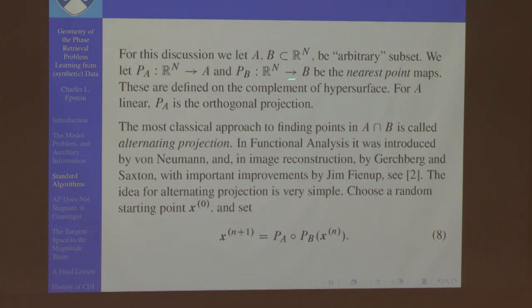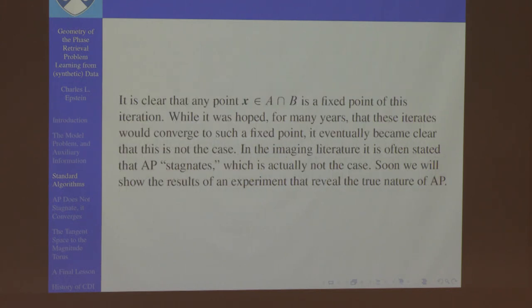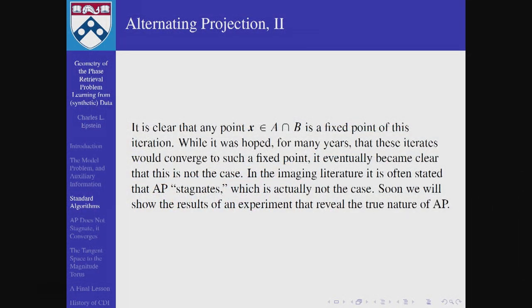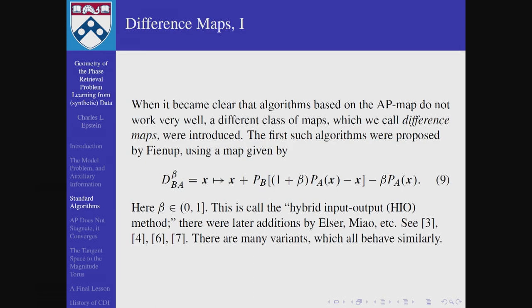If A or B are linear subspaces then these are just orthogonal projections. It's clear that any point in the intersection is a fixed point of the map. For many years it was hoped — and stated in the physics literature — that intersection points were the only fixed points, but eventually it became clear that this was not the case. In the imaging literature, people say the alternating projection algorithm stagnates, but I think that statement is completely false, and it's something we can really understand by doing experiments.